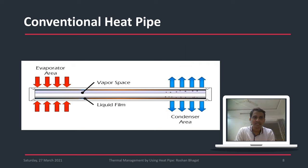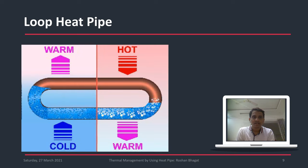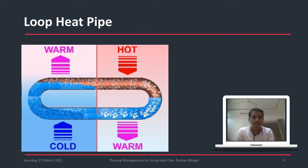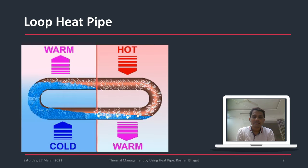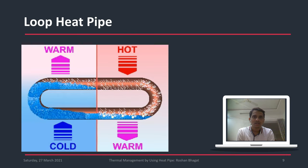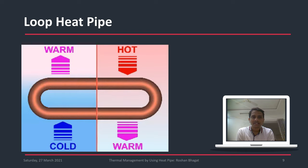This is an example of a conventional heat pipe. Running the animation shows vapors forming, moving toward the condenser section, and returning to the evaporator section. A loop heat pipe is generally considered to be one whose ends are closed. This is an example where heat is absorbed and rejected — two working fluids exchange heat in a loop heat pipe configuration.